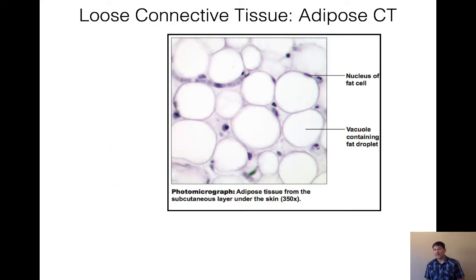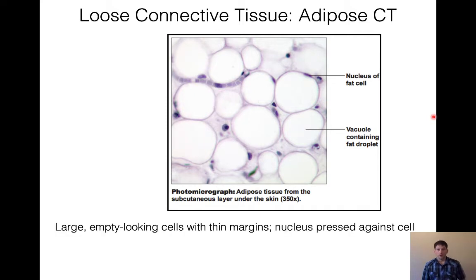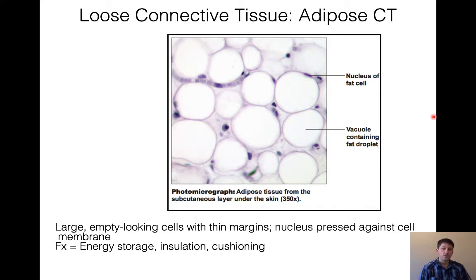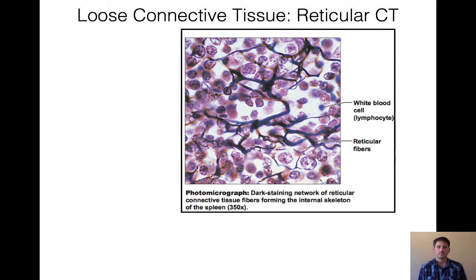Next, we have adipose connective tissue. We see the nucleus of the adipose cell with a large vacuole where lipids are stored. These are large, empty-looking cells with the nucleus generally pushed up against the side. Their functions include energy storage, insulation, and cushioning. You'll find them around the kidneys and around the heart to protect internal organs, in the hypodermis below our skin, and in the breasts.